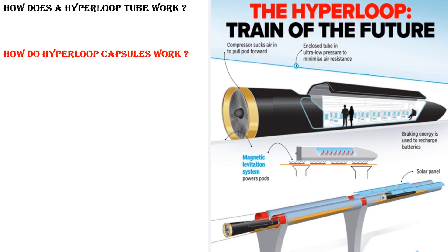The hyperloop works with magnetic levitation to float the capsule. A compressor at the front of the capsule sucks air to prevent air buildup and reduce drag. By keeping the tube at ultra low pressure, air resistance is minimized. The tube is essentially maintained in a near-vacuum, keeping pressure very low so air resistance remains less.